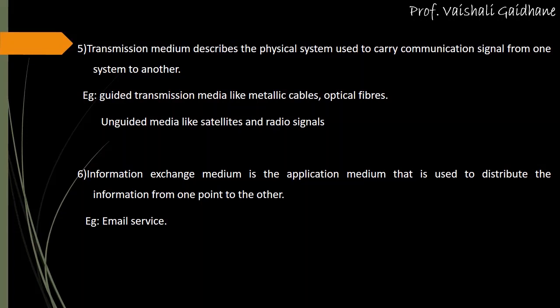Through transmission medium, you can pass information using mobile networks, Wi-Fi, or hybrid optical cables. Also, geographical information through radar gives information about the whereabouts of flights. All of these deliver information by means of some medium, and that medium is called the transmission medium.